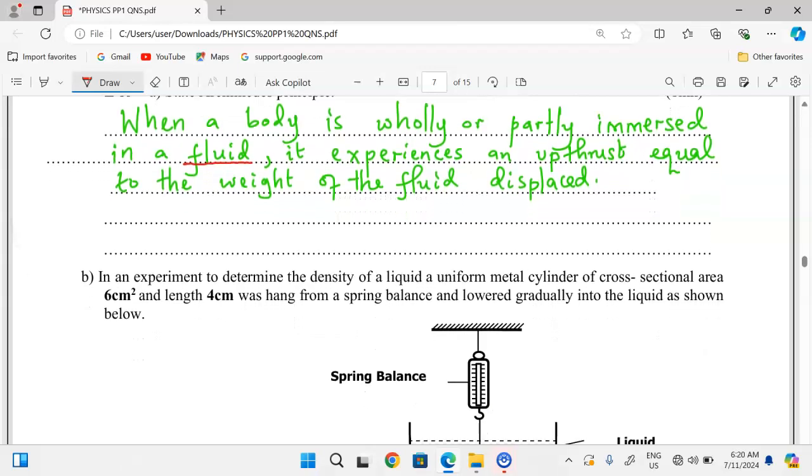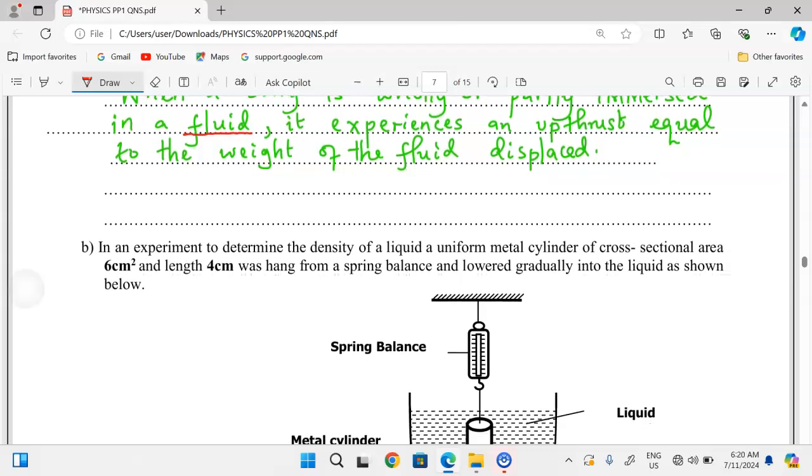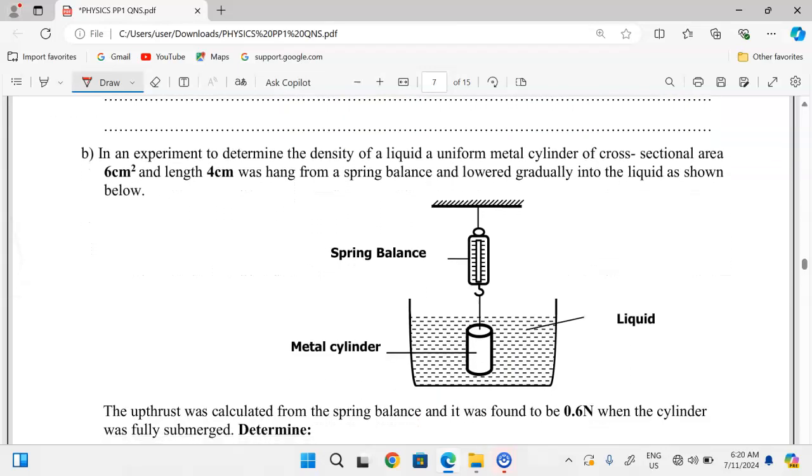Now in the application of the principle, we're going to handle a question here. In an experiment to determine the density of a liquid, a uniform metal cylinder of cross-sectional area six square centimeters and length four centimeters was hung from a spring balance and lowered gradually into the liquid as shown below.